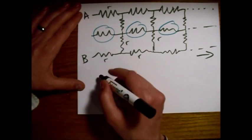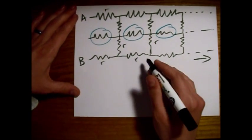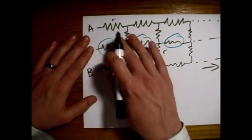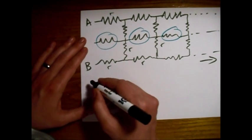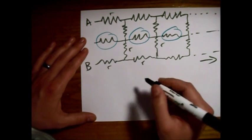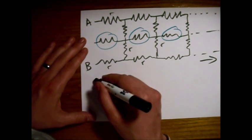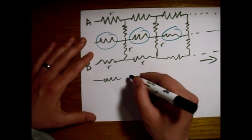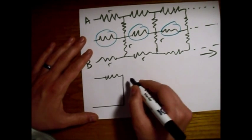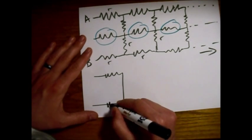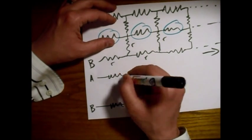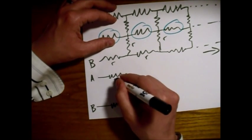We're going to add an extra set on. So right now, let's take what we have here already and condense it down to one equivalent resistance. This equivalent resistance we'll call big R.